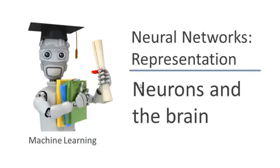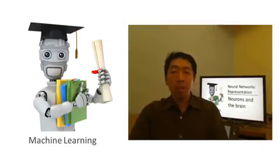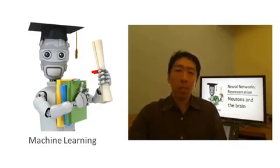Neural networks are a pretty old algorithm that was originally motivated by the goal of having machines that can mimic the brain. Now in this class I'm teaching neural networks to you because they work really well for different machine learning problems and not certainly not just because they're biologically motivated.